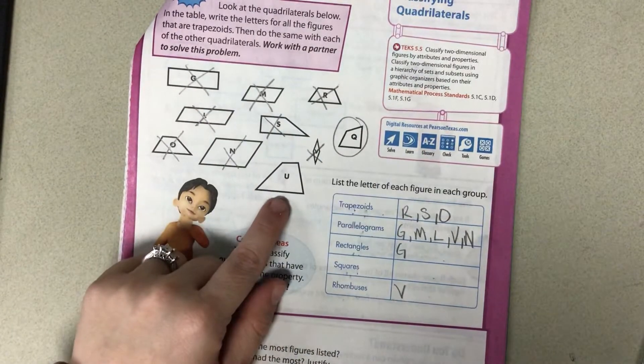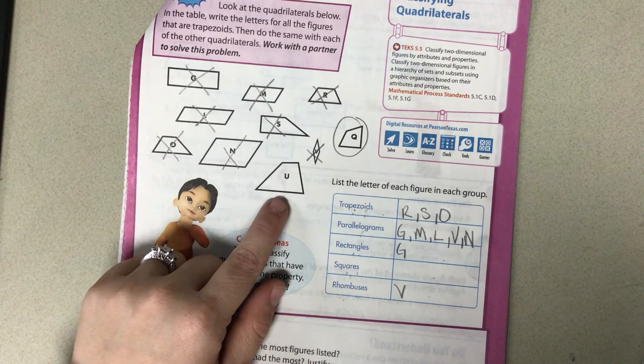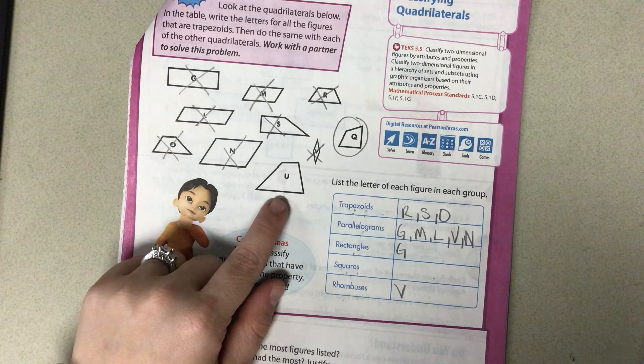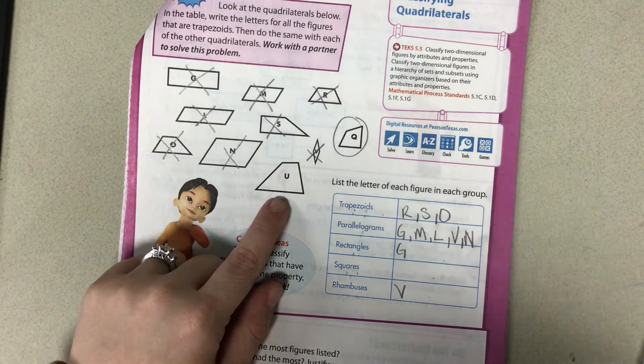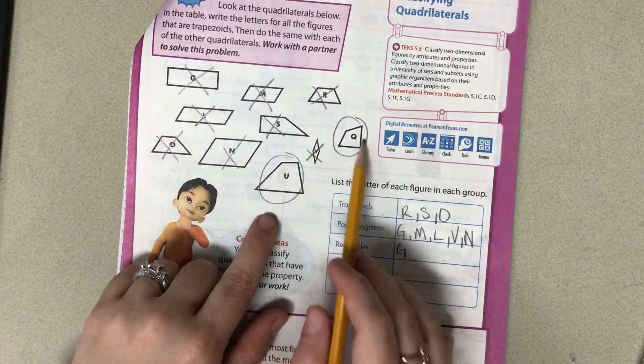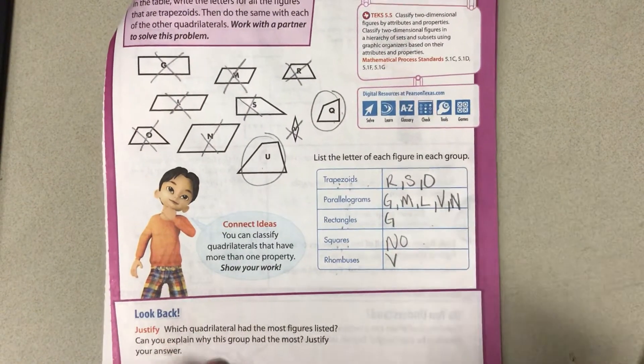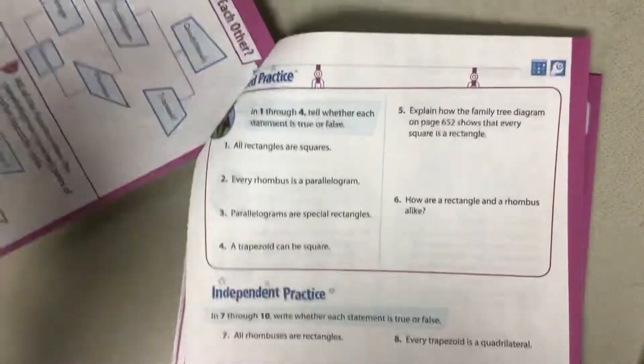And what about U? Where does U belong? U is our loner again. U doesn't have a place. So U and Q don't have a place to go. And look, we have no squares. None. All right, let's keep going.